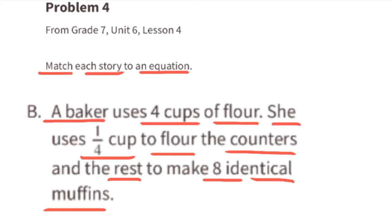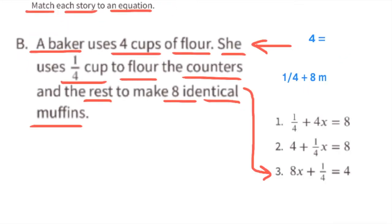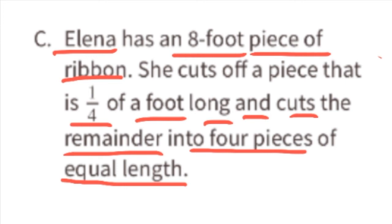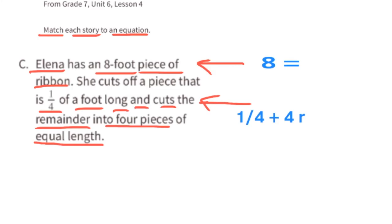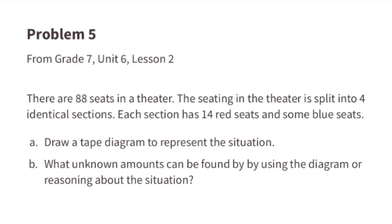Story b — a baker uses 4 cups of flour total. She uses one fourth cup to flour the counters and the rest to make 8 identical muffins. The total 4 cups equals one fourth cup for the counters plus an unknown amount for each of the 8 muffins. Story b matches equation three: 8x plus one fourth equals 4. Story c — Elena has an 8-foot piece of ribbon. She cuts off one fourth of a foot and cuts the remainder into 4 pieces of equal length. Story c matches equation one: one fourth plus 4x equals 8.